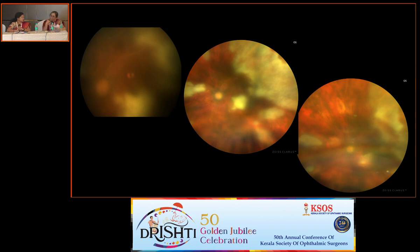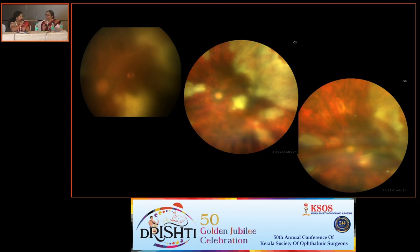Retinal infiltrates can happen in lymphoma as well, but choroidal involvement — no. Choroidal involvement can happen in Toxo with large lesions. It could still be a peripheral Toxo that flared up due to the sub-Tenon's steroid injection.